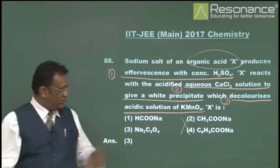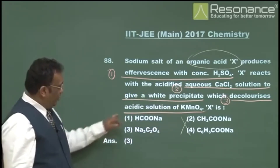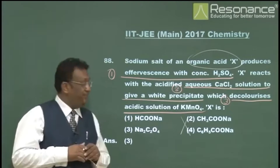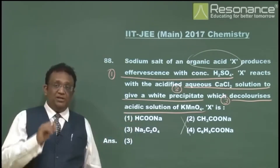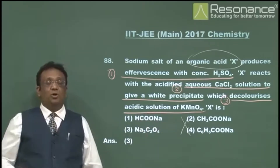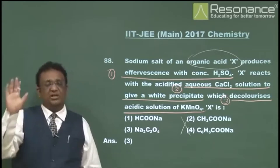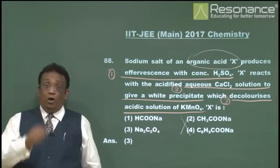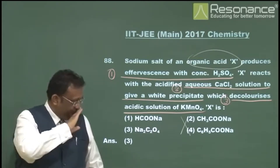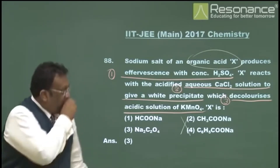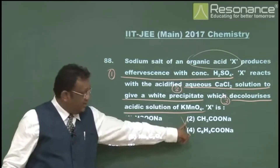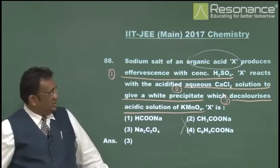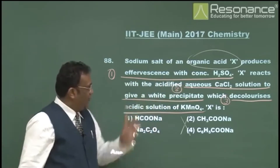Between options 1 (formate) and 3 (oxalate): formate ions and acetate ions are nearly always water soluble — all formates are water soluble. Calcium formate is also water soluble, so formate would not give a white precipitate with calcium chloride. Therefore, formate can be eliminated by criterion 2.